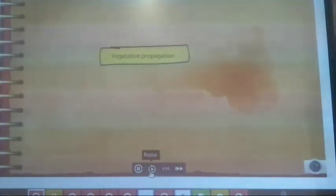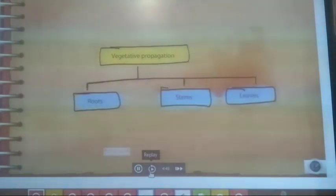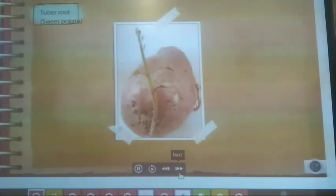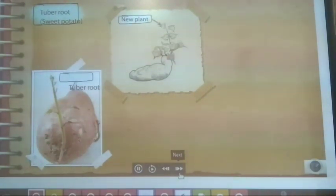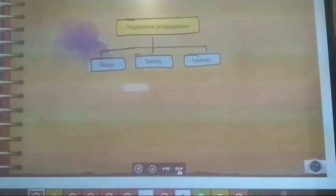Vegetative propagation involves the growth of new plants from the vegetative parts such as roots, stems and leaves of the parent plant. Some plants such as sweet potato and tapioca have modified roots called tuber roots. Buds from these tuber roots give rise to new plants. These roots also store food, which the young plants use during their growth. The stems of some plants also have variations. They may be sub-aerial or underground stems.